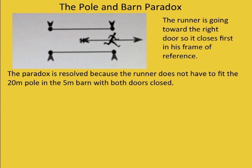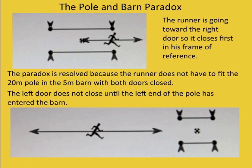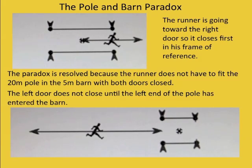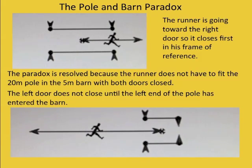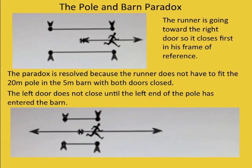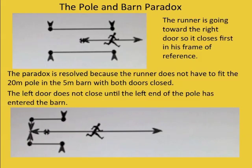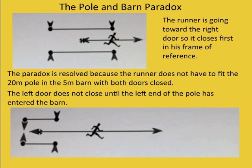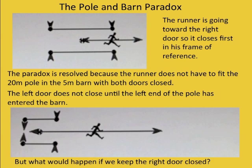So if we go back and look at it again from the runner's point of view, this is the same thing we just saw. The pole never has to fit in the barn with both doors closed. The right door closes, then opens again, and the runner enters the barn. And the left door doesn't start to close until the runner's in the barn and doesn't close until the left end of the pole is in the barn. And so that resolves the paradox. The doors were never closed together, and so the pole didn't have to fit in the barn.